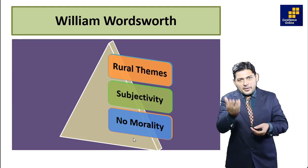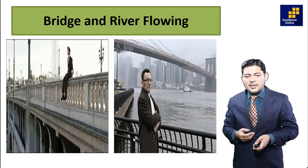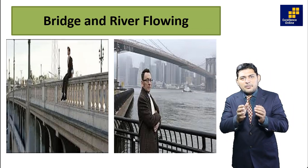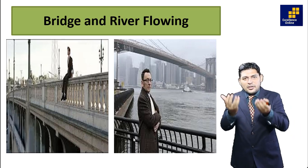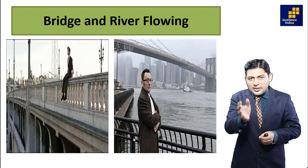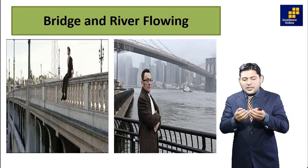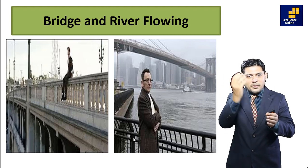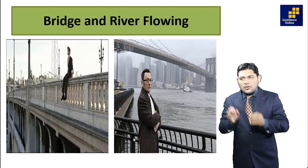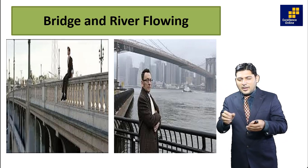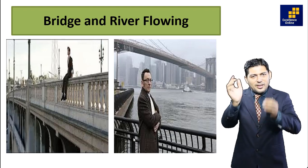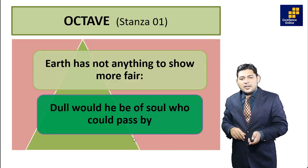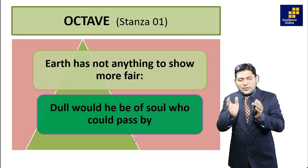'Sonnet Composed upon Westminster Bridge' — by the name itself, it is a bridge located in London city. Early in the morning, the poet is standing on the bridge observing the situation. The river is flowing and we have natural description throughout the poem.